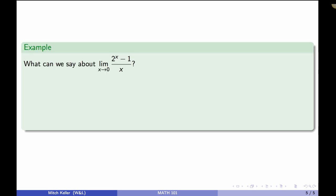Okay. So now, what can we say about this limit? Limit as x approaches 0 of 2 to the x minus 1 all over x. Again, undefined at x equals 0. Right? So we've got to think about that.